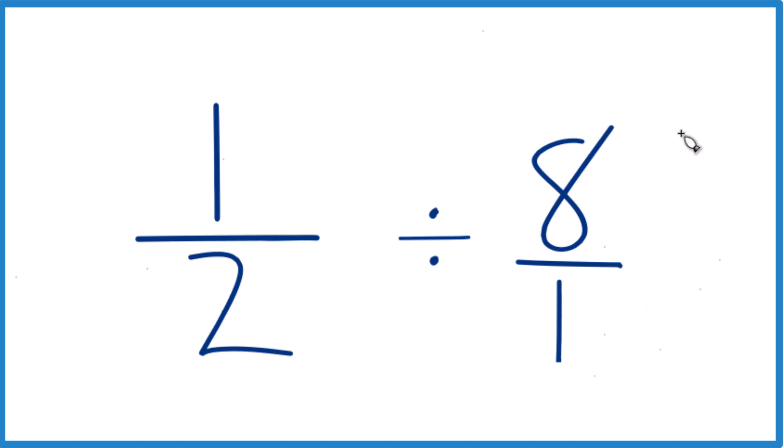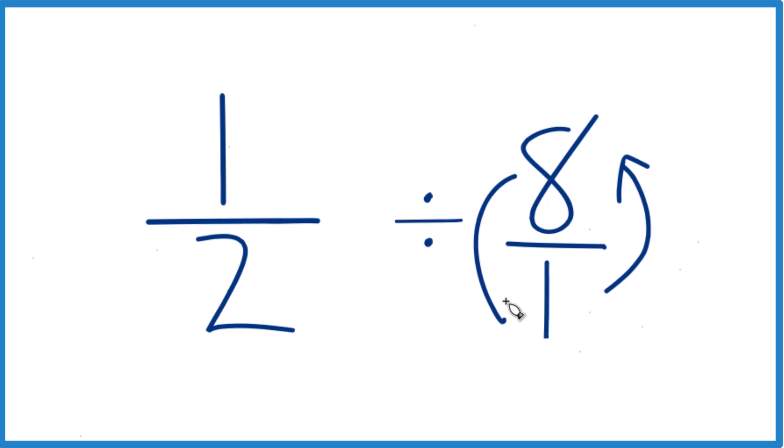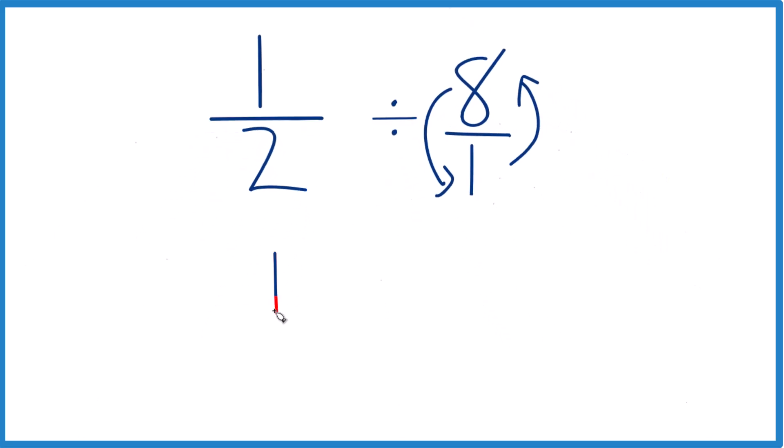Next, what I'm going to do is take the reciprocal of eight over one. So I move the denominator to the top and the numerator to the bottom. That way, I have my one-half, then instead of division, since I'm taking the reciprocal, I can do multiplication. So we have one over eight, one-eighth.